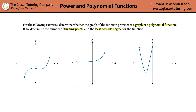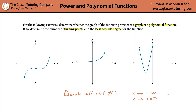A couple of rules here. When you're dealing with a polynomial function, the domain must be all real numbers. Said another way, the x values must go to negative infinity and x must also go to positive infinity. Writing it in interval notation, the domain would be from negative infinity to positive infinity.